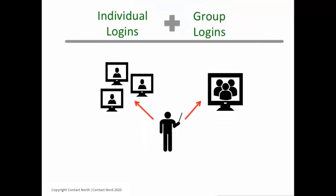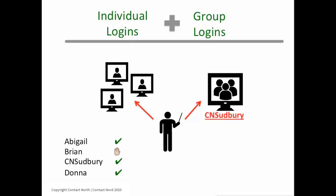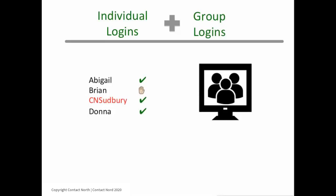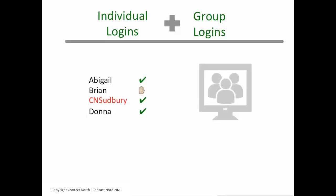You may also have participants logged in individually and participants logged in as a group using one computer and one login ID. The online classroom conveniently shows display names of attendees in the attendees pod. However, if a group of participants log in using one login ID from a common location, only the name of that location will be displayed. Handling questions and planning for interactivity should be an extra consideration in these situations. The following tips can help these invisible participants have more of a presence in the session.